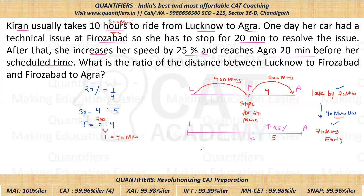We need to find the ratio of distance between Lucknow to Firozabad and Firozabad to Agra. Since speed is constant throughout the normal journey, the ratio of time equals the ratio of distance. Time for Lucknow to Firozabad is 400 minutes and Firozabad to Agra is 200 minutes, so the ratio is 2 is to 1.